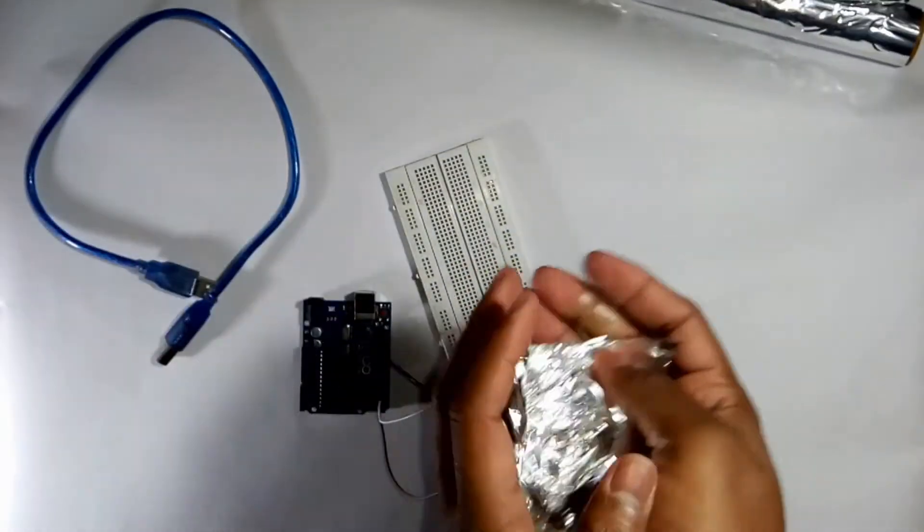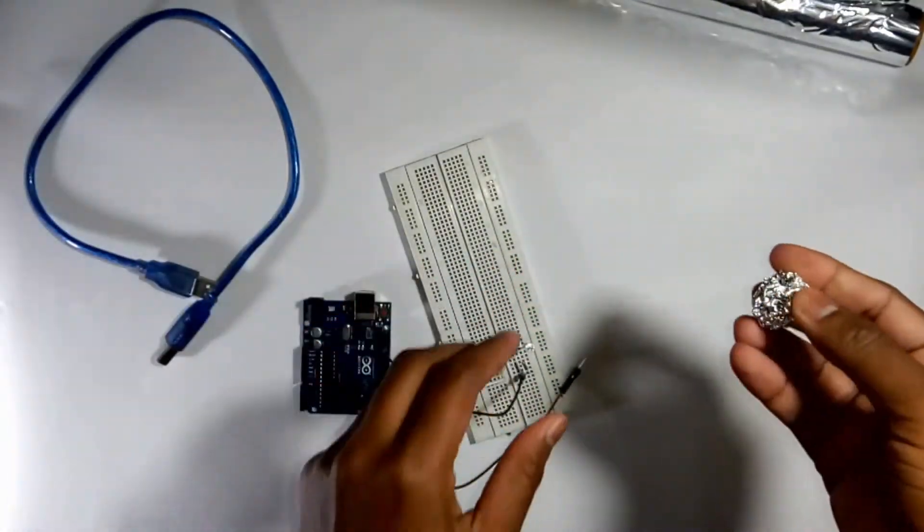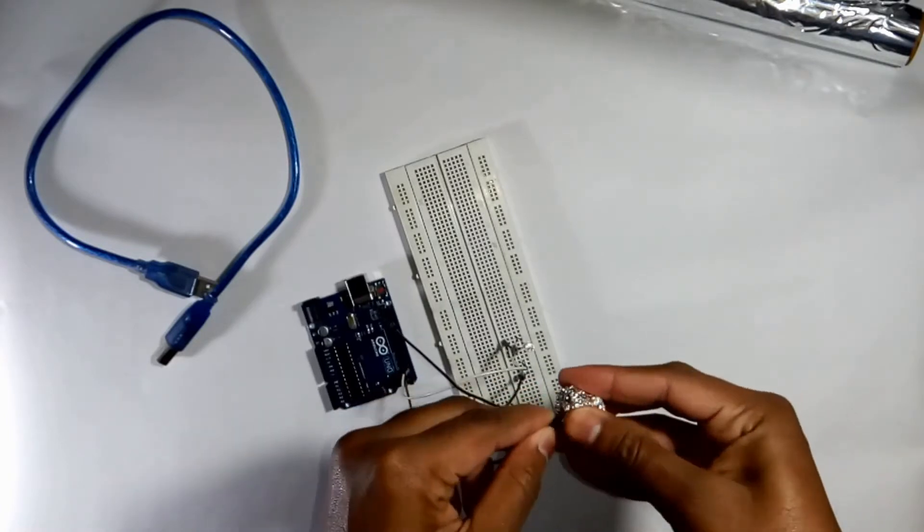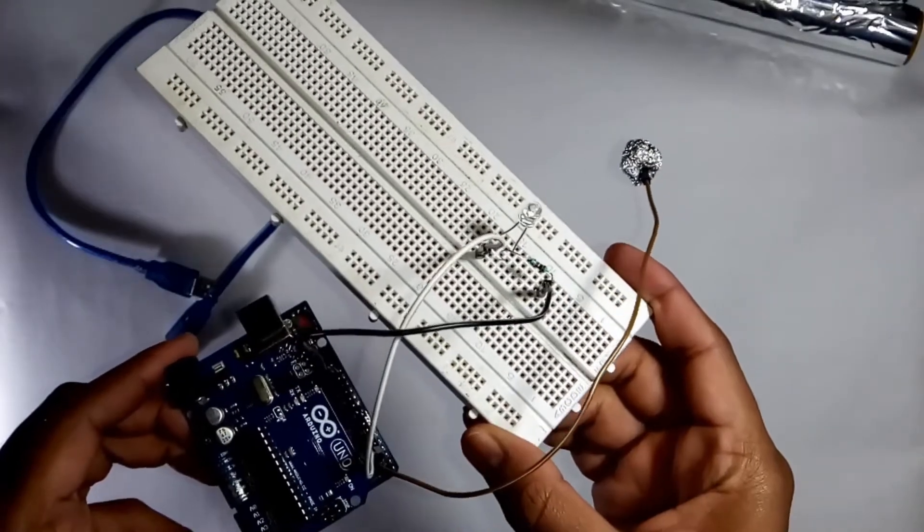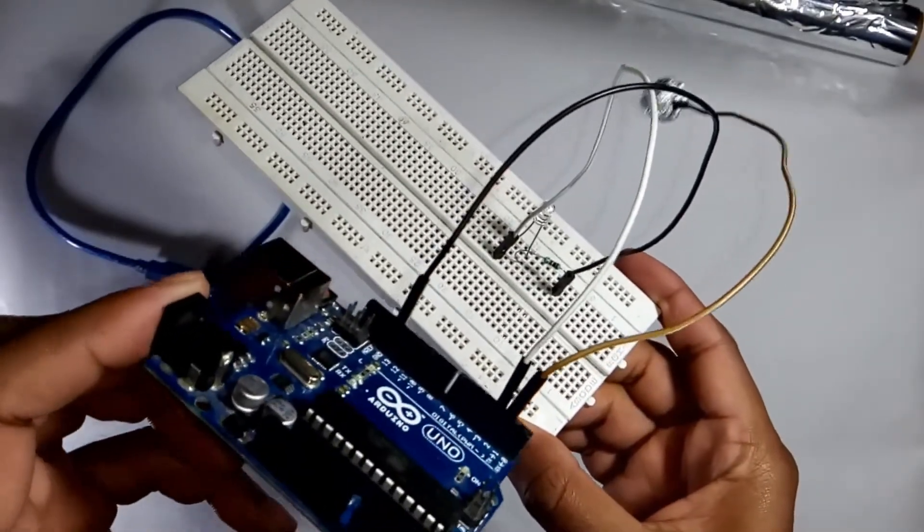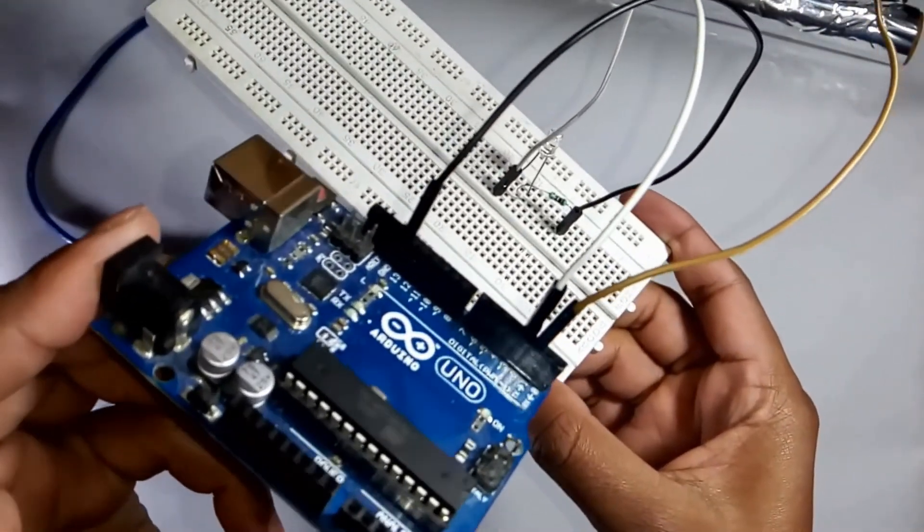And make it like this for conducting purpose. Here you see all the connections like brown wire connected to pin number 2 and white to 3.